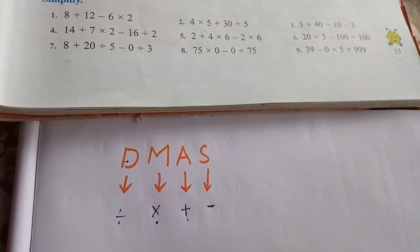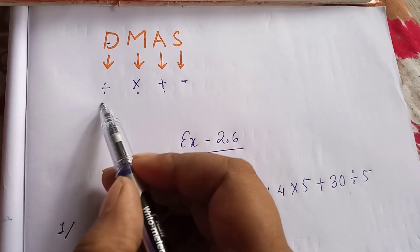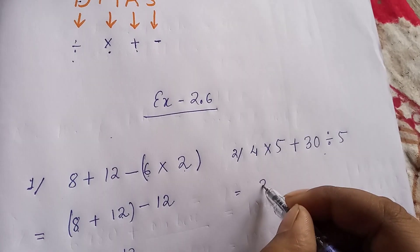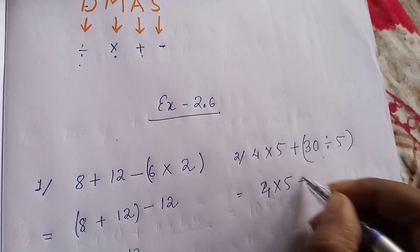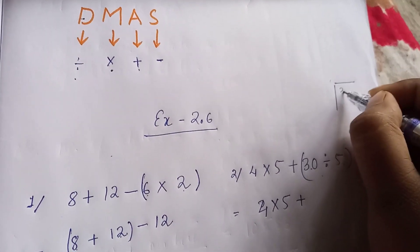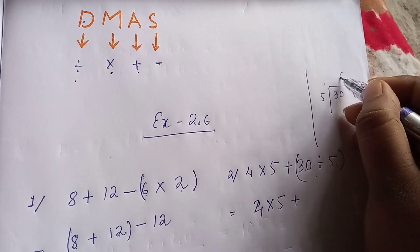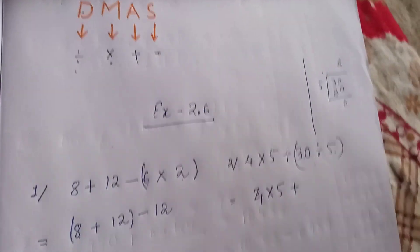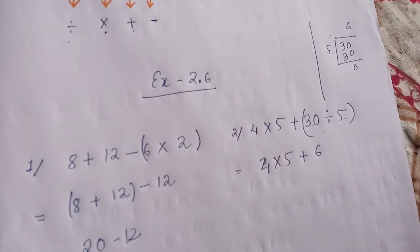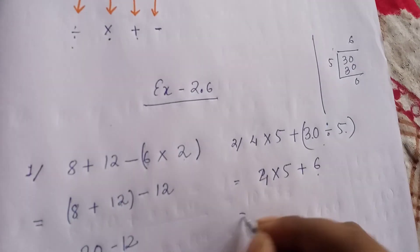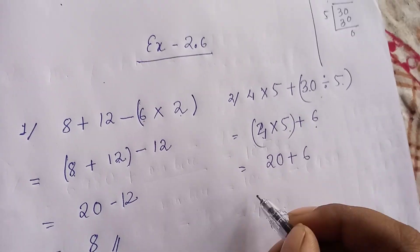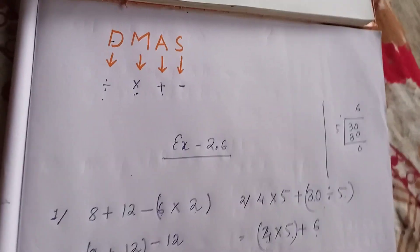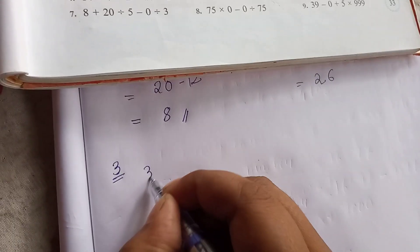Question number 2 is 4 into 5 plus 30 divided by 5. Division is present, so first we go for division: 30 divided by 5. 5 times 6 is 30, so the answer is 6. Then we do multiplication: 4 into 5 equals 20. Finally, addition: 20 plus 6 equals 26.